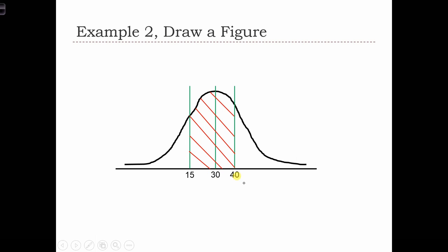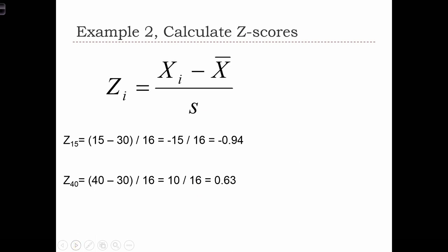Let's compute our z-scores. First, we find the z-score where X equals 15, which is 15 minus 30 over 16, the standard deviation, which equals negative 0.94. The second z-score is 40 minus 30 all over 16, which equals 0.63.